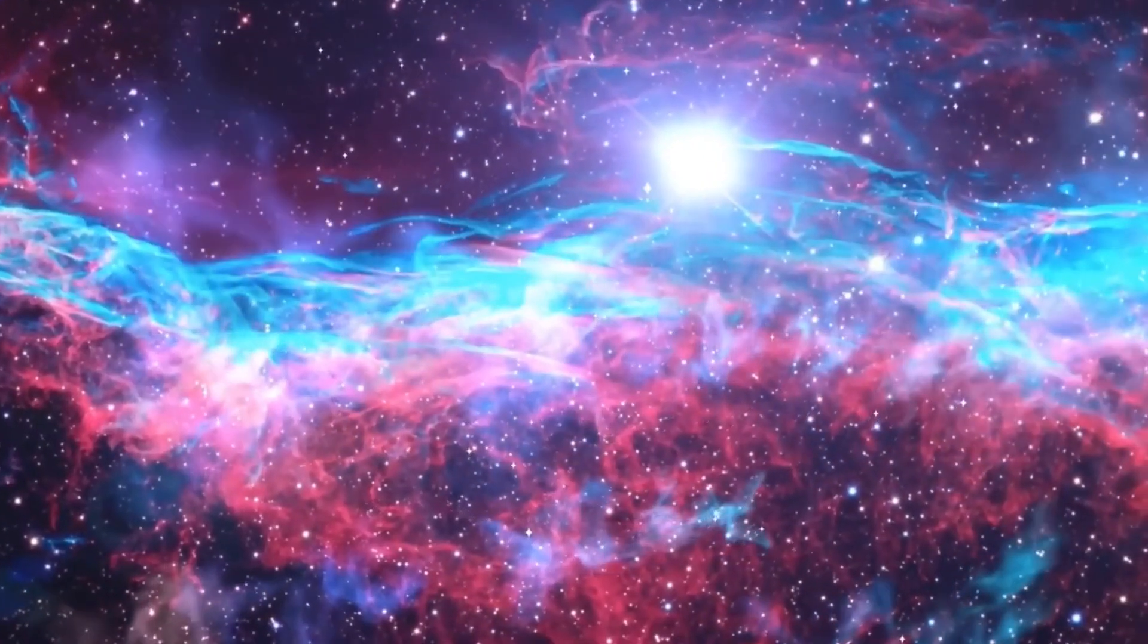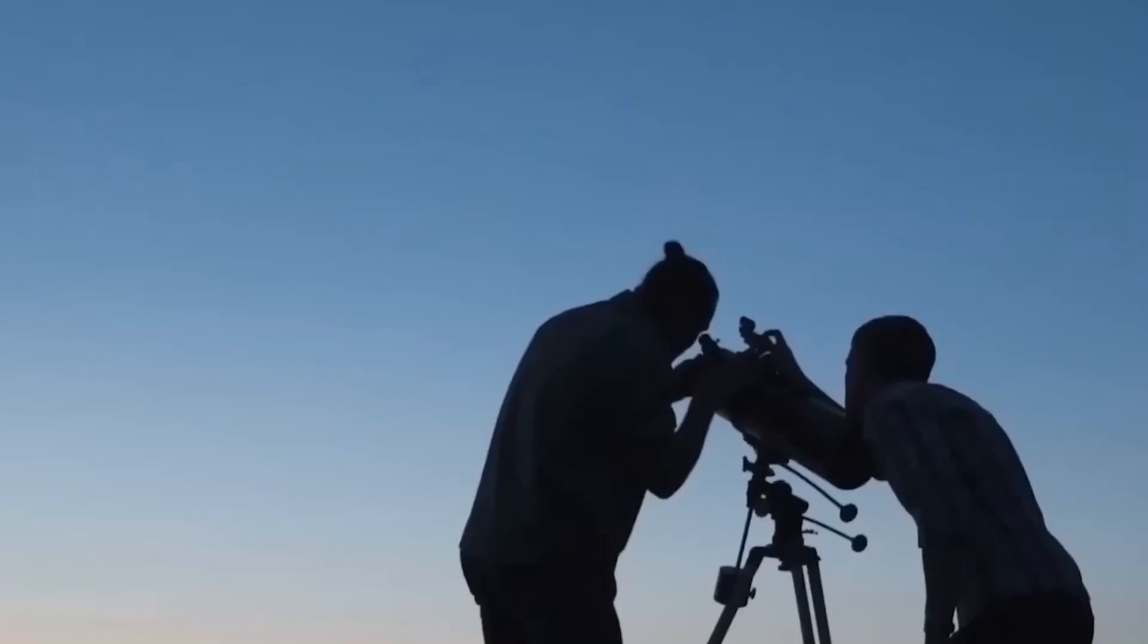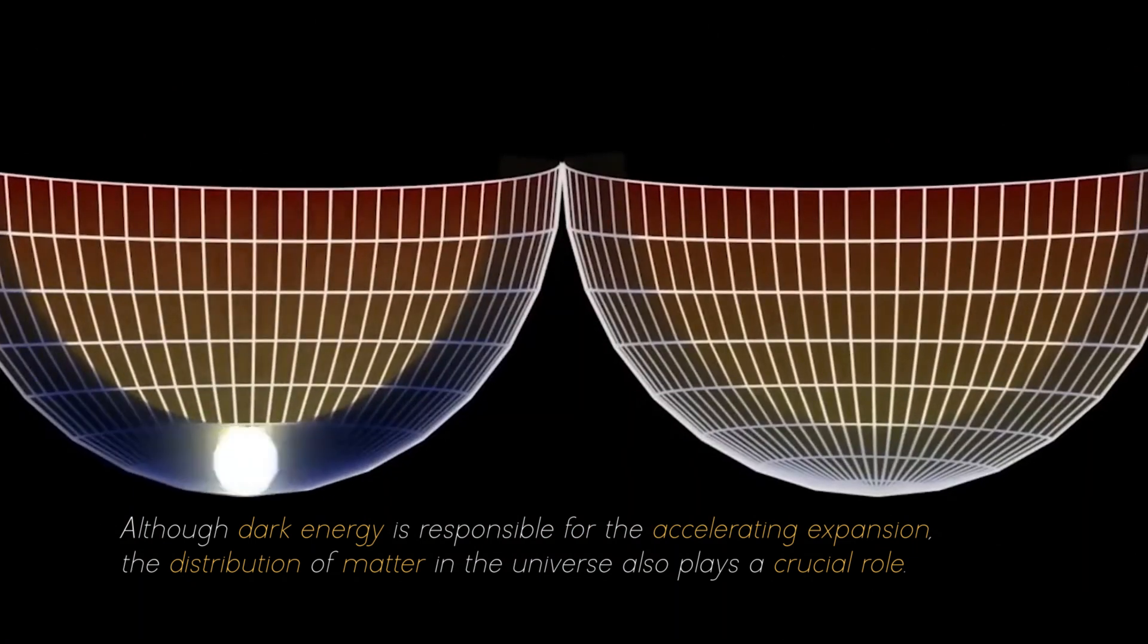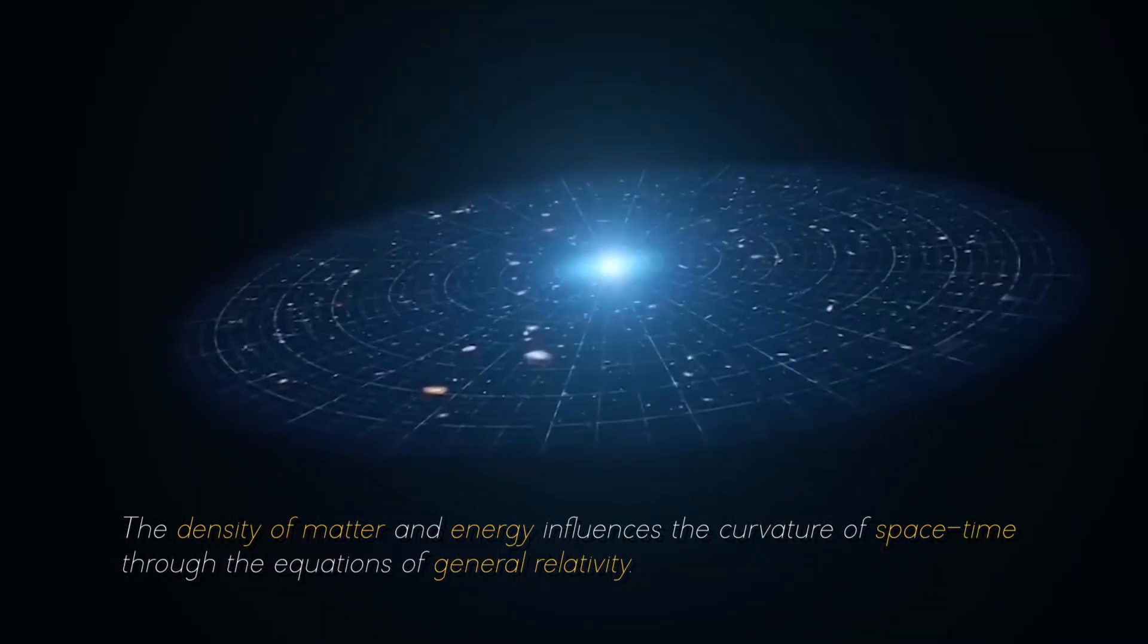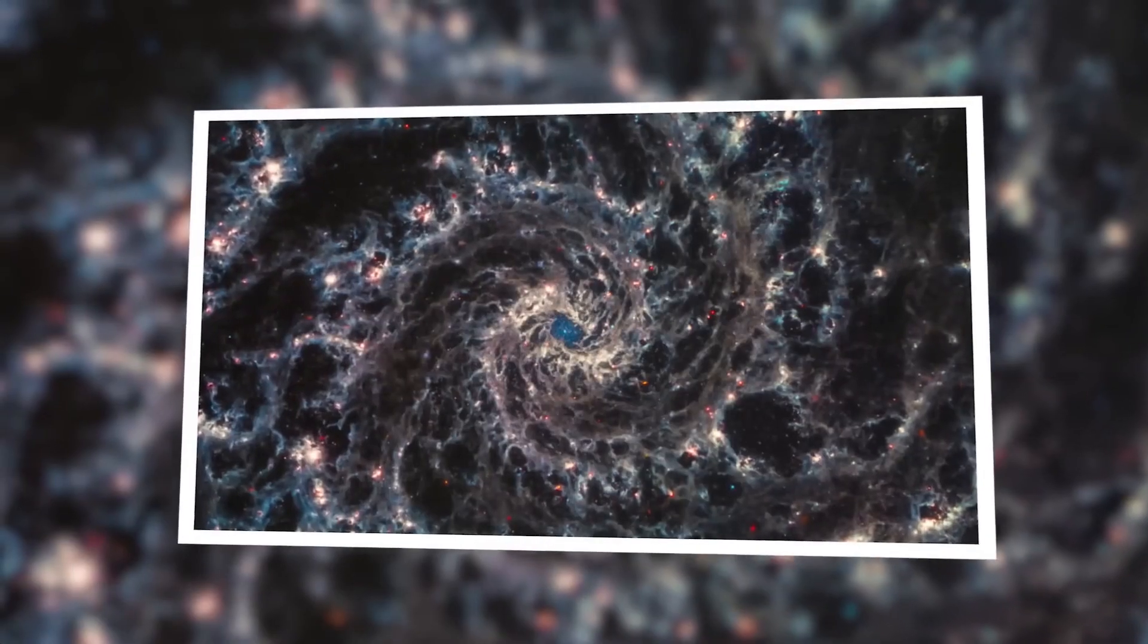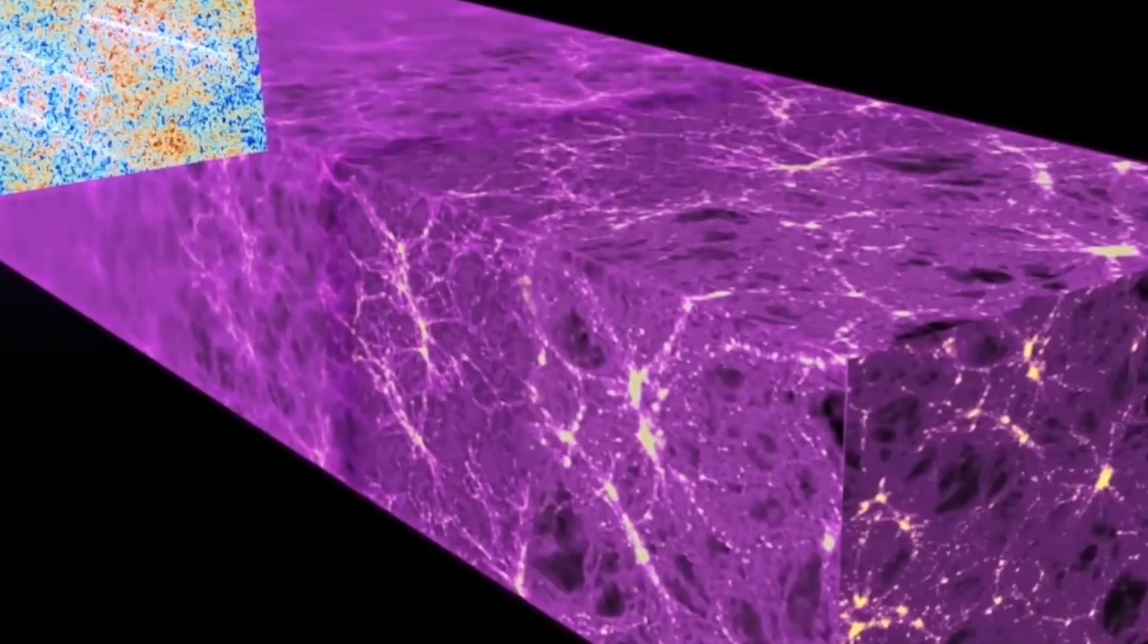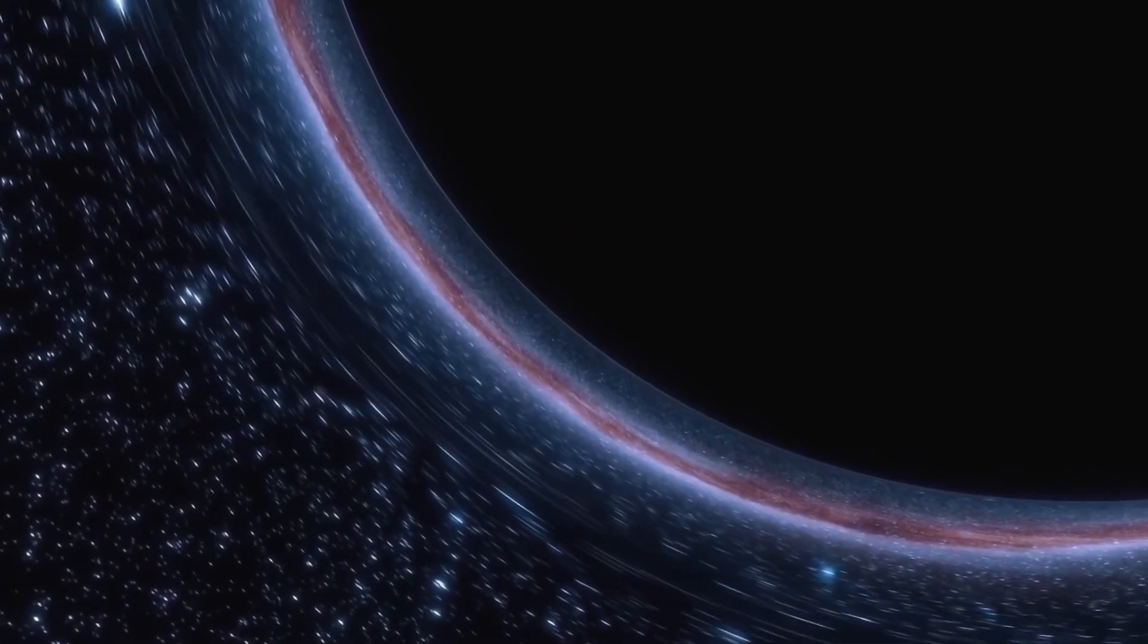The precise nature of this energy remains one of the greatest mysteries in modern cosmology, and scientists are actively investigating its characteristics. Although dark energy is responsible for the accelerating expansion, the distribution of matter in the universe also plays a crucial role. The density of matter and energy influences the curvature of space-time through the equations of general relativity. Regions with higher density exert a stronger gravitational pull, which slows down the expansion of the cosmos. On the other hand, regions with lower density experience a weaker gravitational attraction and contribute to the overall expansion of the universe.